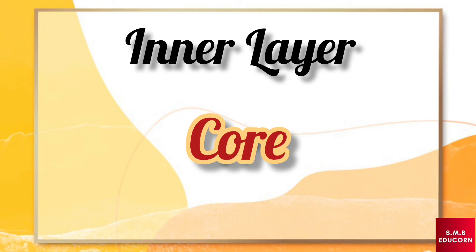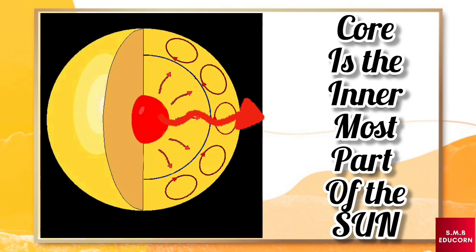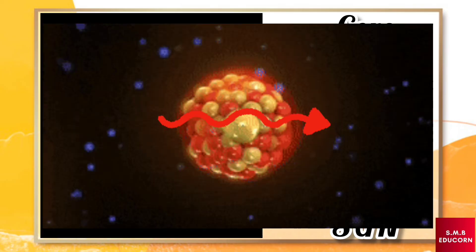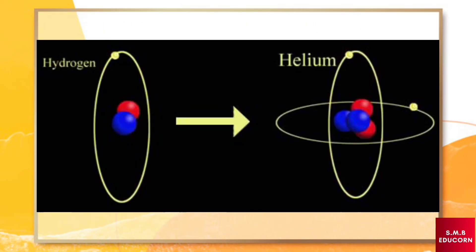Next, core. Core is the innermost part of the sun. Inside the core, nuclear reactions take place constantly. And hydrogen gets converted into helium.